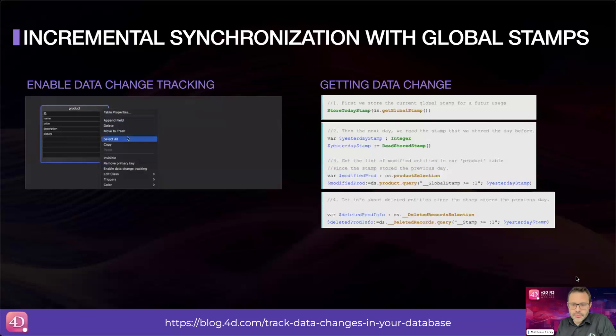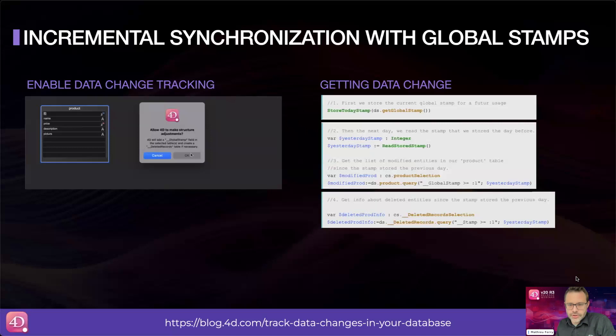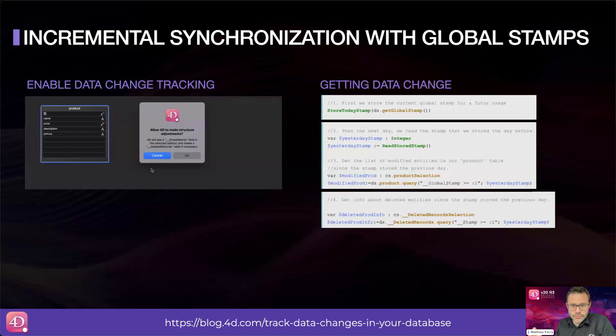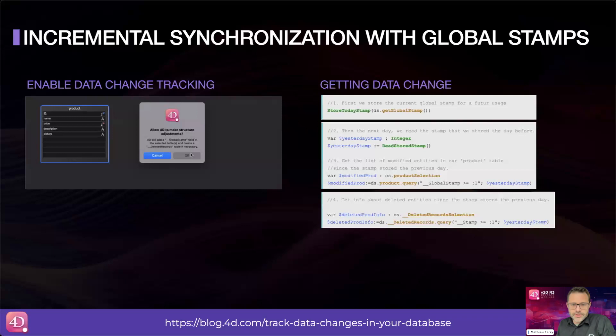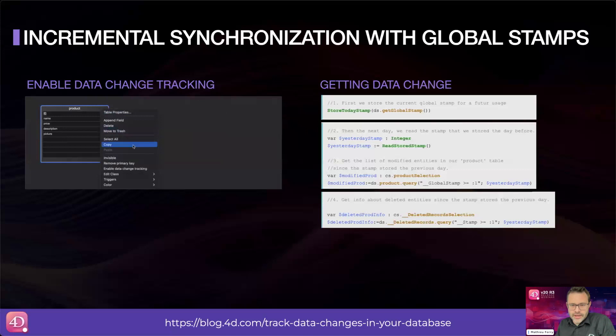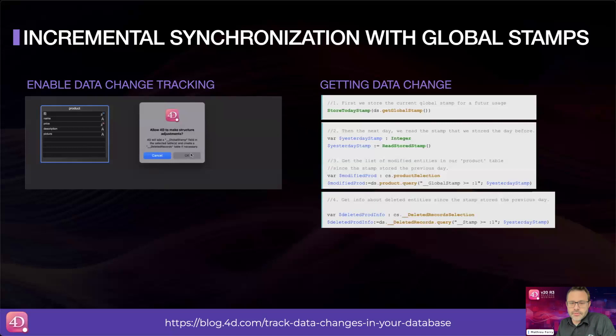Let's run a little example. Suppose you want to get data modifications since yesterday. First, you need to store the current global stamp for future use — this is done in step one with the get global stamp function. The next day, step two, you retrieve the global stamp you stored the day before. In step three, you run a query that compares the current global stamp with the one retrieved the day before, giving you the entity selection of entities modified since then.